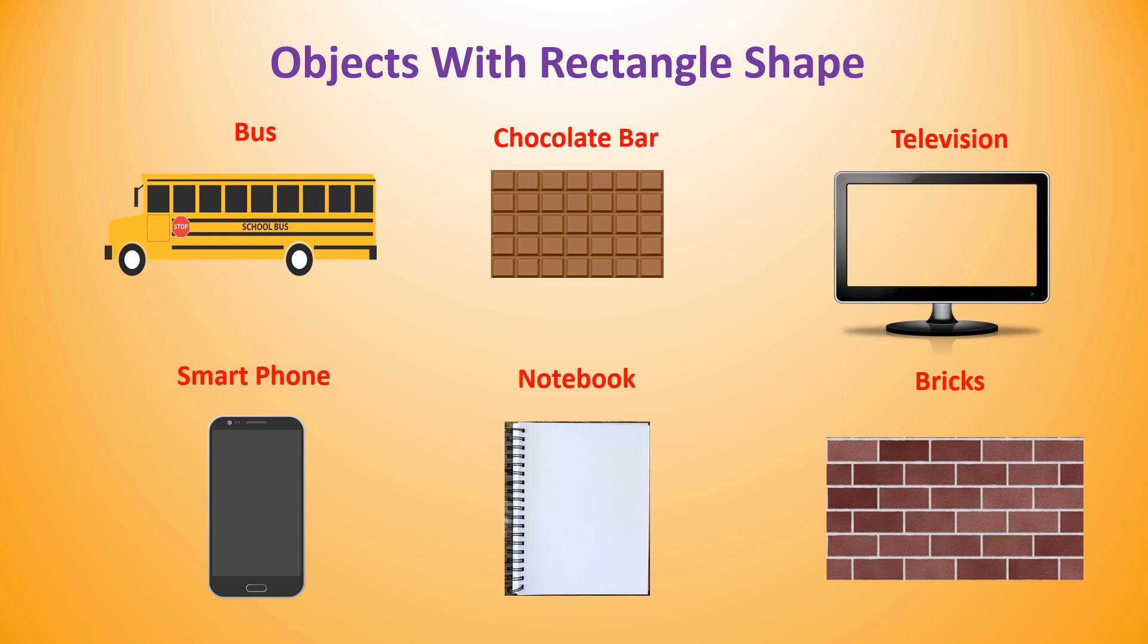Objects with rectangle shape are numerous and you can spot them easily in your surrounding objects. If you carefully observe chocolate bar, television, smartphone, notebook, bricks, you can see a shape of rectangle in each of these objects.